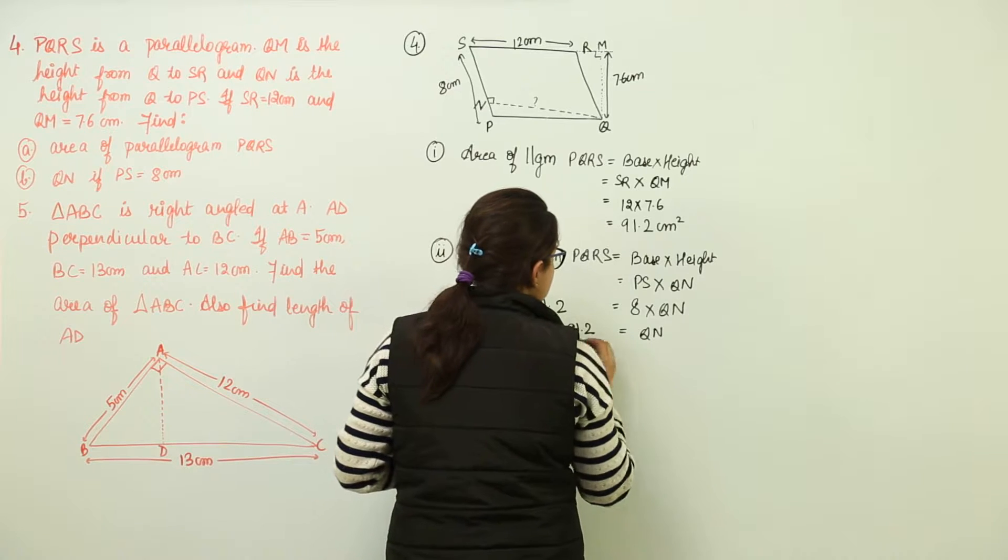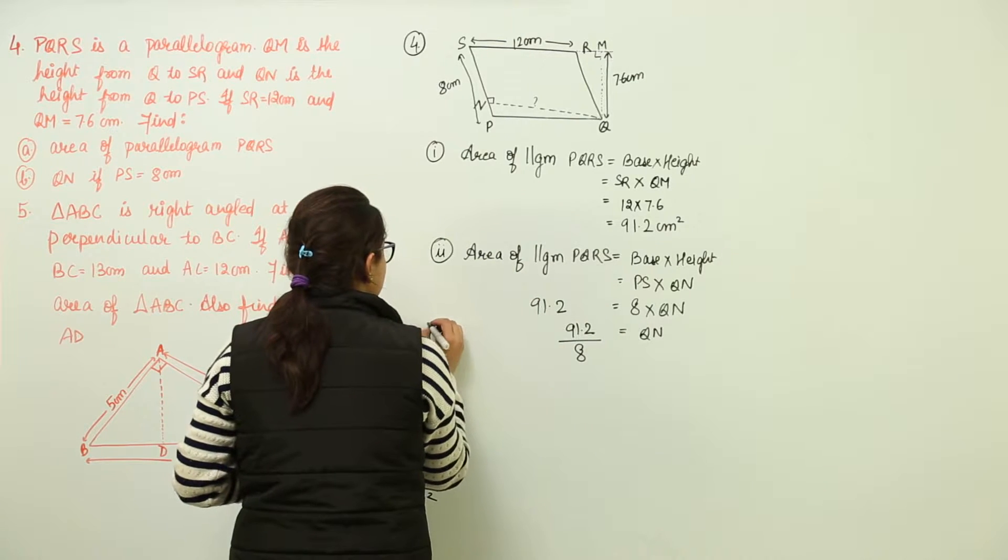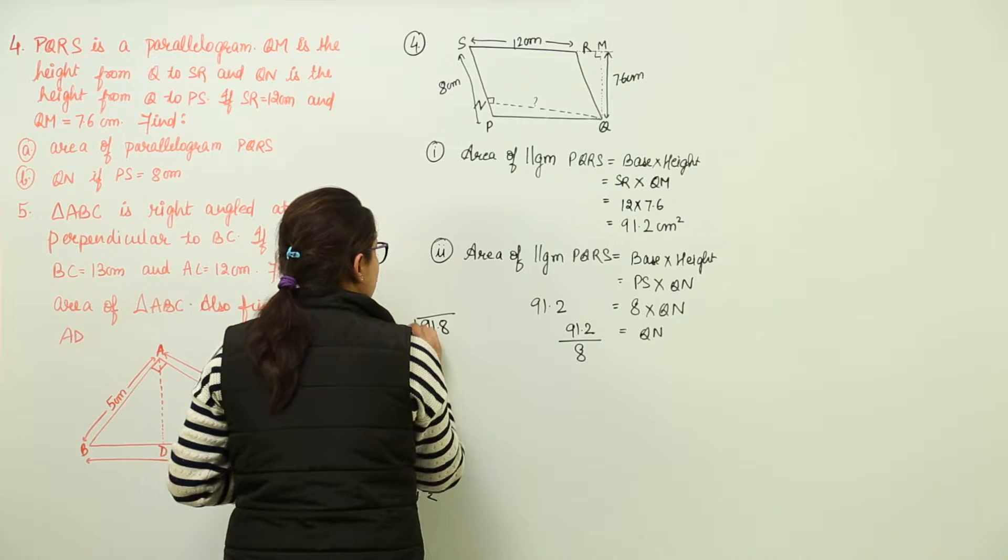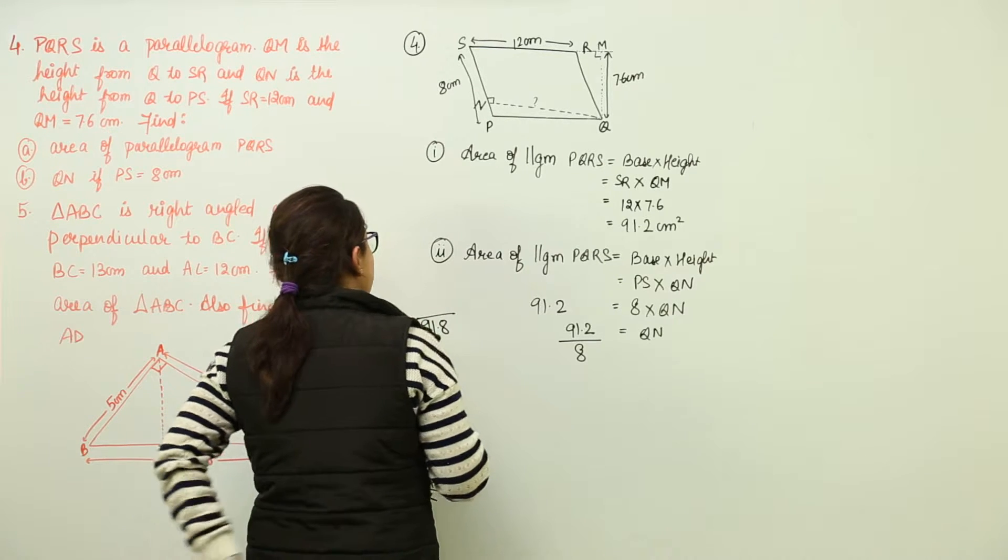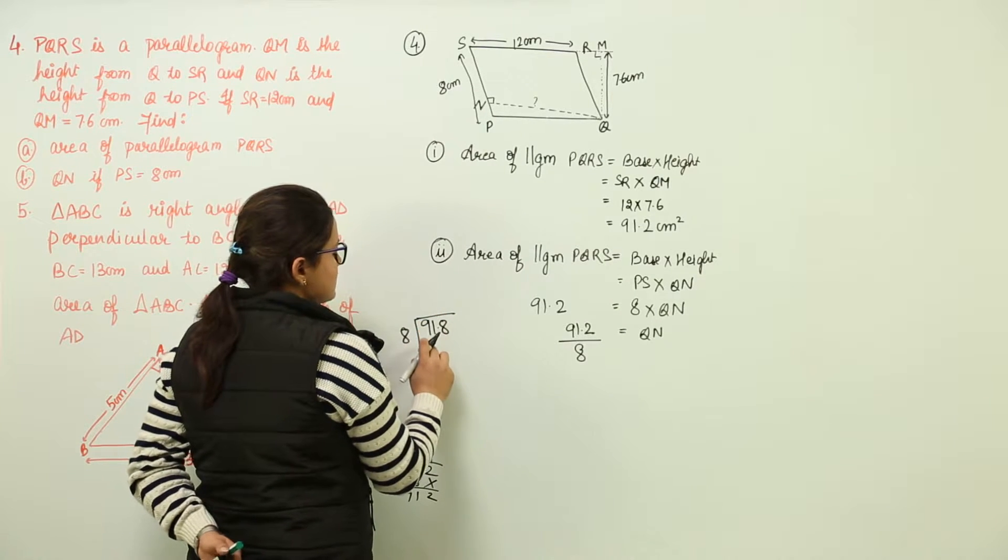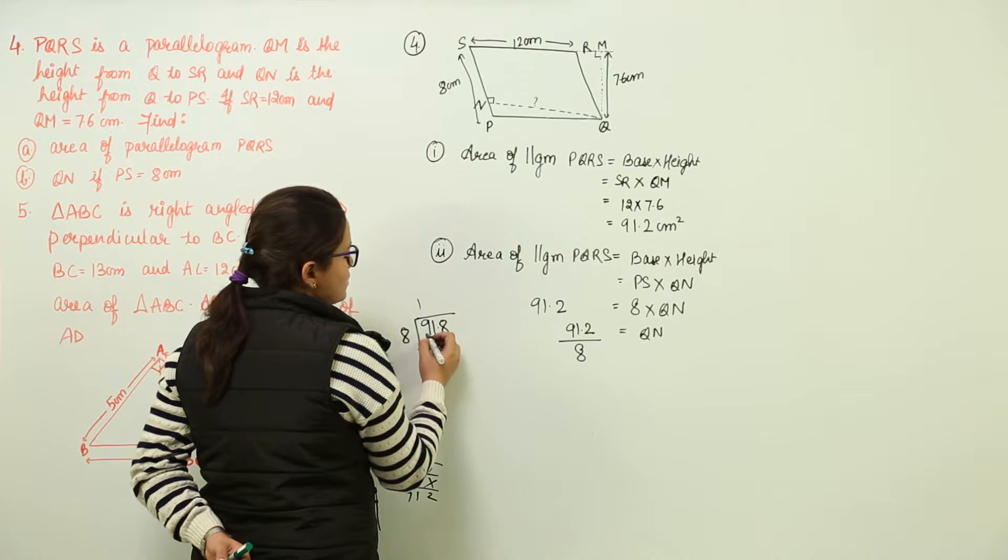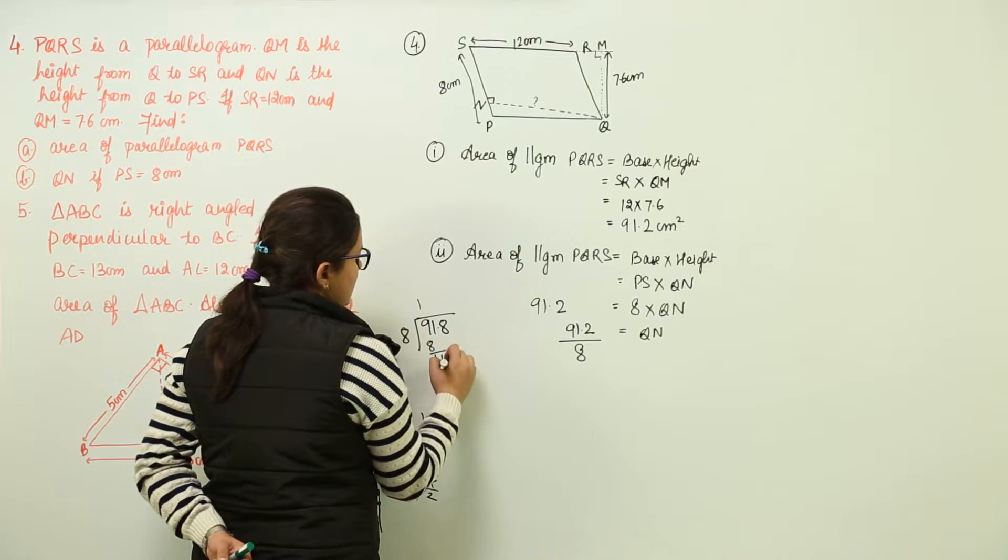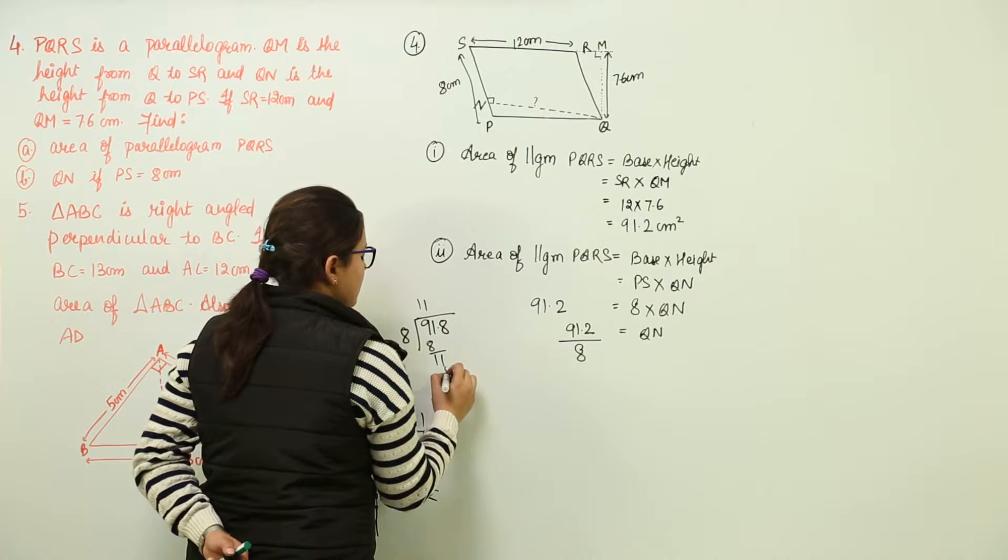On solving this, you will get, let us divide it, 91.2 with 8. We will get 8 7s as 56, 8 9s as 72. We can do it from the one digit only. So 8 1s as 8, 11. Now you get 8 1s as 8 again.